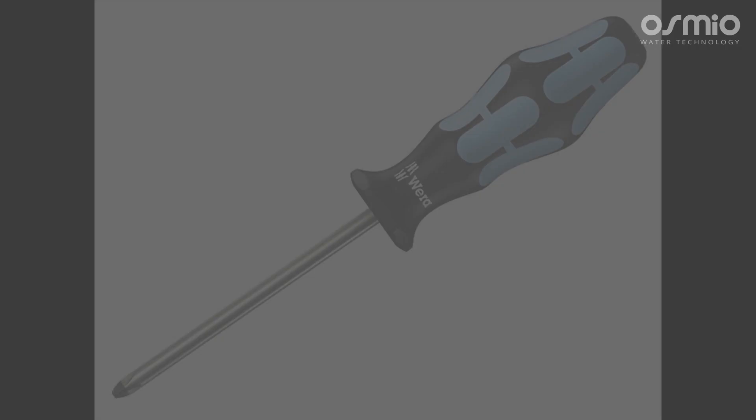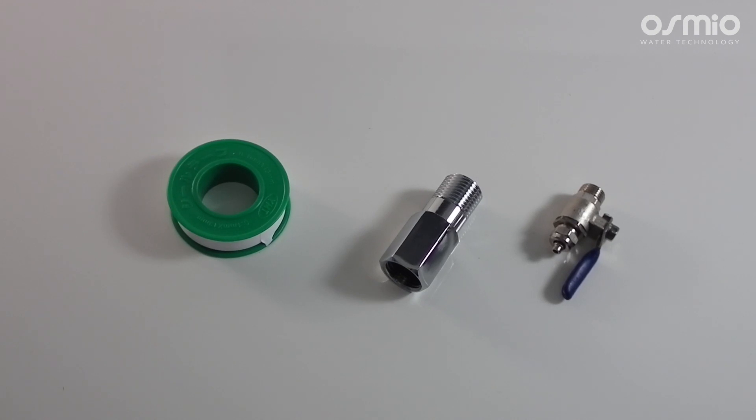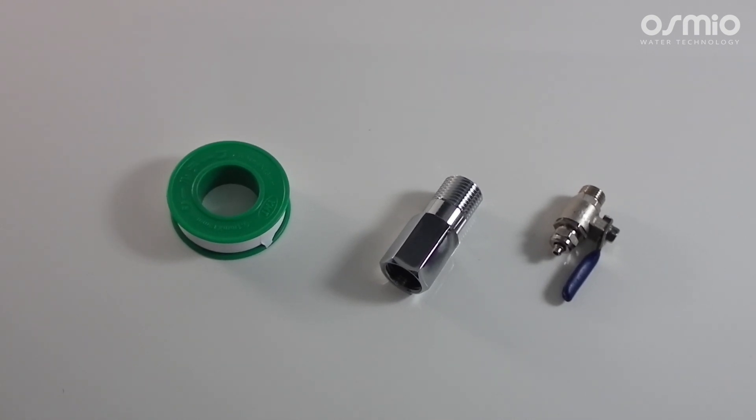For the next step let's assemble the feed water system. Be sure you have the diverter valve, the metal ball valve, and the PTFE tape with you.